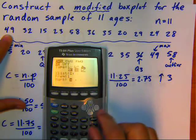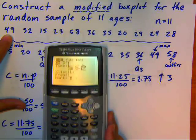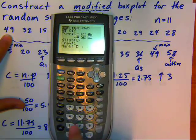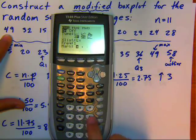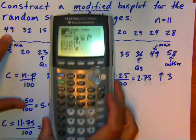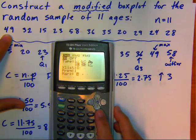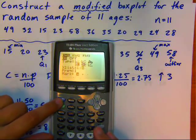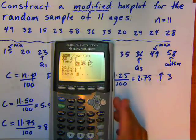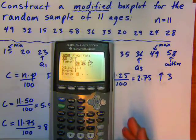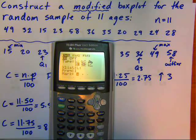I have my data in list one. If you need to change the list, if you had it in list two or three, etc., above the one, two, three, four, five, six keys are the different list names. So you just do second L2 or second L3, whatever list that you have. Leave the frequency as the one. The mark of a box usually shows up a little bit better than the pluses. That's going to be where your mark is for your outlier.